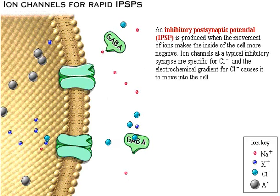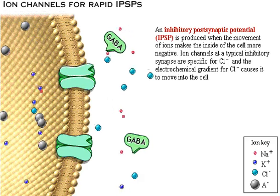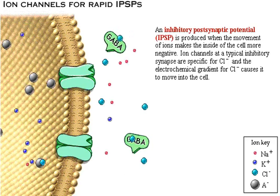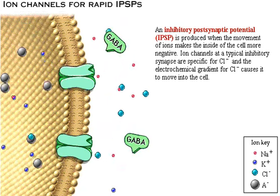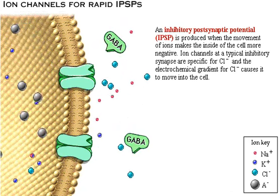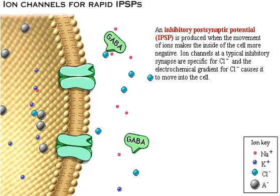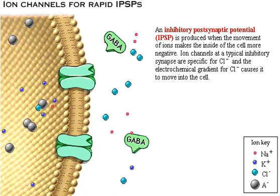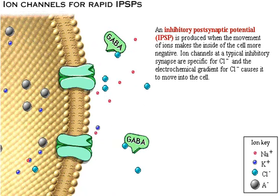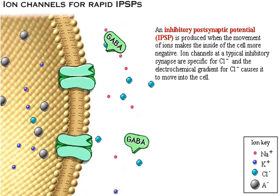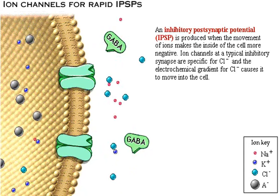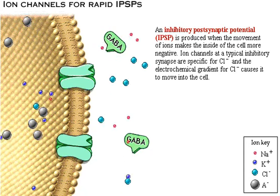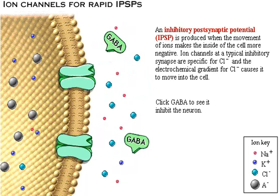An inhibitory post-synaptic potential, or IPSP, is produced when the movement of ions makes the inside of the cell more negative. Ion channels at a typical inhibitory synapse are specific for chloride, and the electrochemical gradient for chloride causes it to move into the cell. Click the neurotransmitter GABA to see it inhibit the neuron.